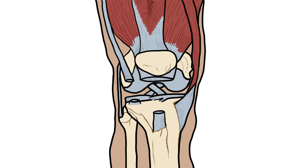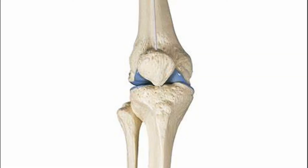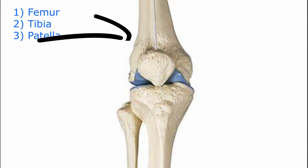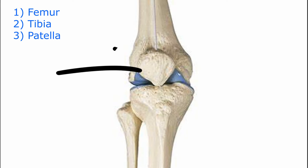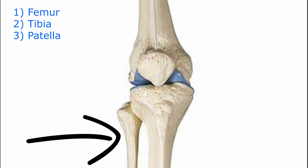Hey guys, it's Layla. Today we'll speak about the knee. For the knee joint, you have three bones that take part in this joint: you've got the femur in the thigh, you've got the tibia in the shin, and then the patella. The fibula is not actually a part of the joint and does not participate in the hinge motion.